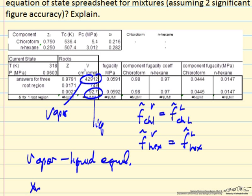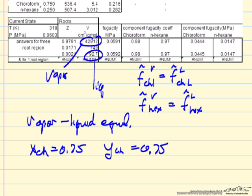This means that x of chloroform is 0.75 and y of chloroform is 0.75. Mole fraction, vapor and liquid the same. This means we must have an azeotrope for this system. So we're at vapor-liquid equilibrium and we have an azeotrope.